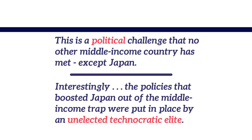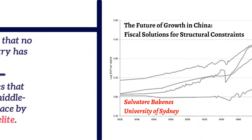The 13th five-year plan put forward by the Communist Party is exactly the right plan. If China implemented it over the next five years, it would go a long way toward breaking China out of the middle income trap. The question is whether China's elite will be willing to pay for all of the fantastic policies contained in that plan. For that, we'll have to see. Thank you for listening. I'm Salvatore Bobonis — you can find out more about me at salvatorebobonis.com or sign up for my monthly newsletter on global affairs.